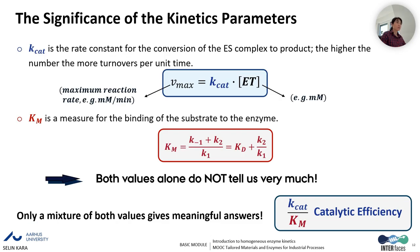Neither Km nor Vmax alone tells us significantly about enzyme performance. That is why we use another parameter called catalytic efficiency, which is the Kcat value divided by Km. Only a combination of both values gives significant information about the enzyme. Kcat is the rate constant for conversion of the ES complex to the product, Km is the measure of substrate binding to the enzyme, and catalytic efficiency is the parameter used to compare the performance of different enzymes for given substrates.